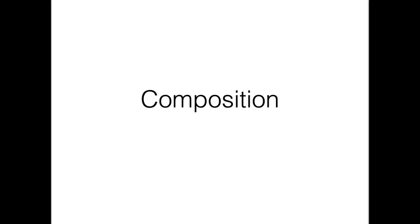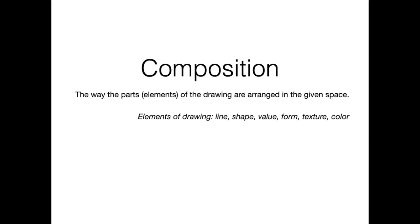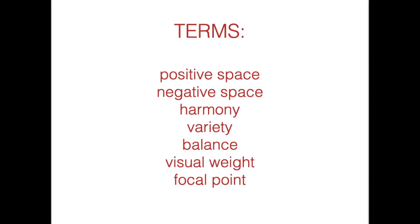Let's talk about composition this week. Composition is the way the parts or elements — which we brought up last week — of the drawing are arranged in the given space. So inside the frame of your drawing, whatever that is, whether it's paper, canvas, or a photo if we're talking about photography, the elements of drawing are line, shape, value, form, texture, and color.